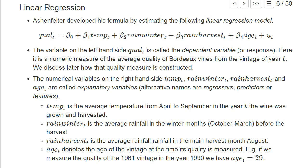He also has another variable, age, which denotes the age of the vintage at the time its quality is measured, and that's basically the time at which the auctions take place for which we have collected data to analyze the average price of the vintage. For example, if we look at auctions in the year 1990 for the vintage from 1961, the age variable would be 29.